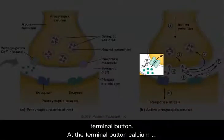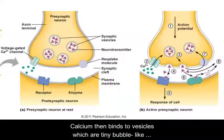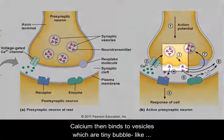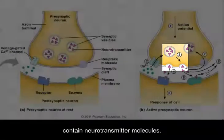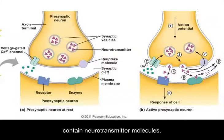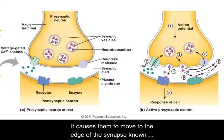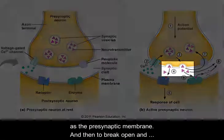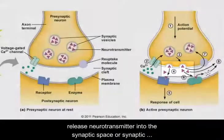At the terminal button, calcium gates open, which allows calcium to enter the neuron. The calcium then binds to vesicles, which are tiny bubble-like structures located at the end of the terminal button, which contain neurotransmitter molecules. Once the calcium has bound to the vesicles, it causes them to move to the edge of the synapse, known as the presynaptic membrane, and then to break open, releasing neurotransmitter into the synaptic space, or synaptic cleft.